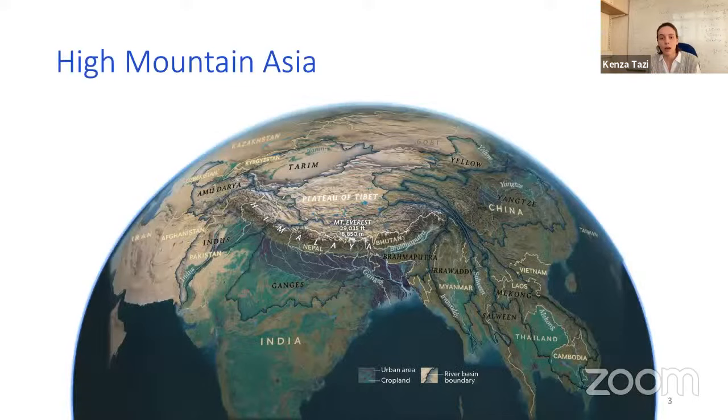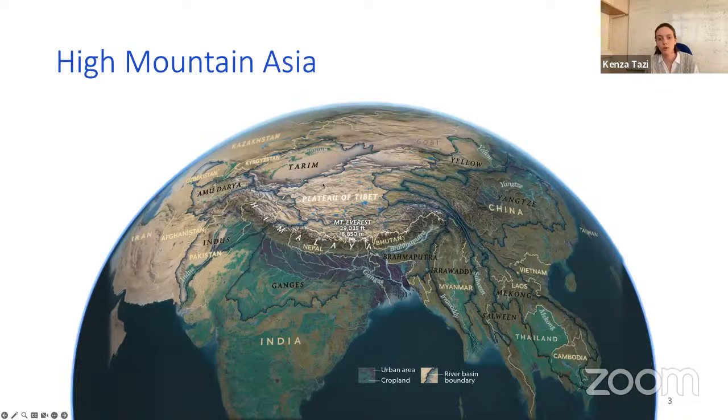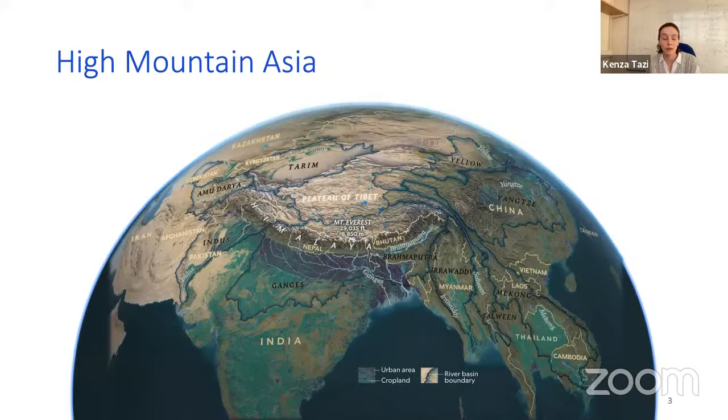So why High Mountain Asia? High Mountain Asia is the high altitude area of the Asian continent that includes the Hindu Kush mountains, the Himalayas, and the Tibetan Plateau. Most of Asia's great rivers, such as the Indus, the Ganges, and the Mekong, originate from these mountains. Together they work as a water tower, storing snow and ice in the winter, which melts in the spring and summer. Through this mechanism, High Mountain Asia supports the livelihood of over 1.9 billion people, providing fresh water for domestic use, agriculture, and energy through hydropower plants.